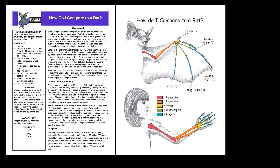In this activity, children take their own measurements and compare them to those of two bat species found in the western United States: the Canyon Bat and the Big Brown Bat.